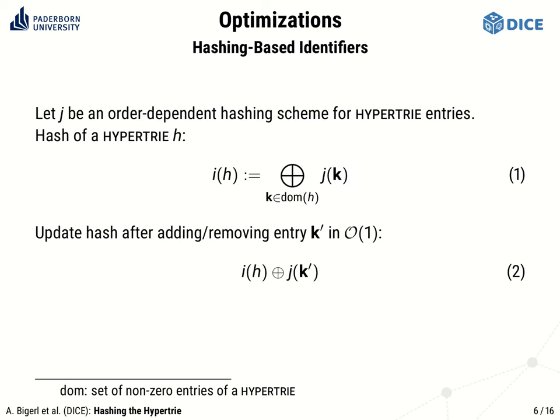How does the hashing work? Let a fixed order-dependent hashing scheme for HyperTrie entries be given. To calculate the hash of a HyperTrie, we combine the hashes of its entries with XOR. Because XOR is its own inverse, it is easy to update the hash when adding or removing an entry. The hash of the updated HyperTrie is simply the hash of the old HyperTrie XOR the hash of the new or removed entry.